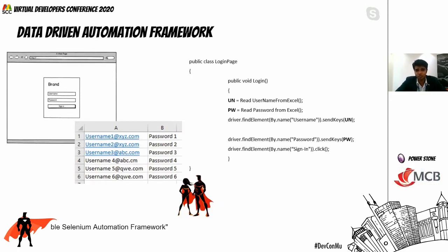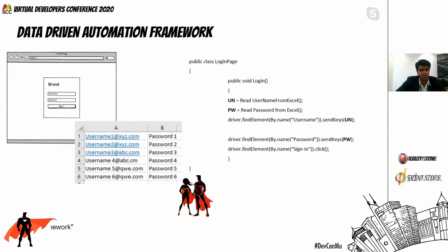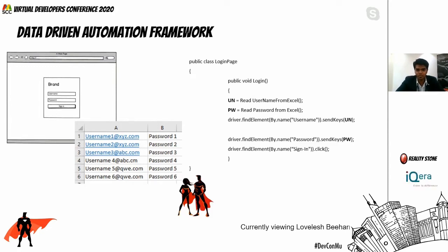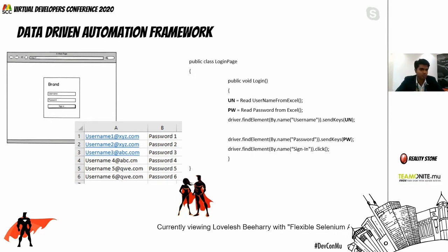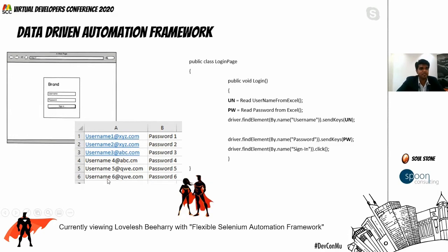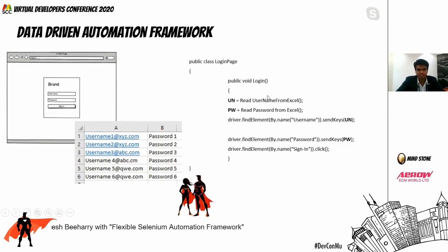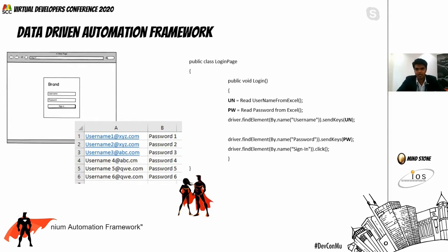The next type is the data-driven automation framework. In this one, we try to externalize the test data. The aim is to have control on the test data so that someone with limited programming skills can still maintain it without diving into code. We could externalize the test data into an Excel file, text file, or XML file — the concept is to separate the test data from the script.